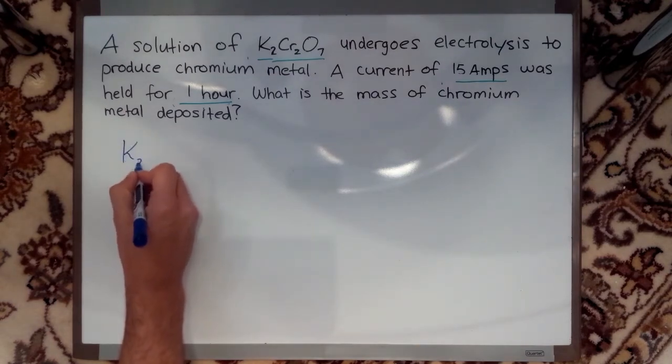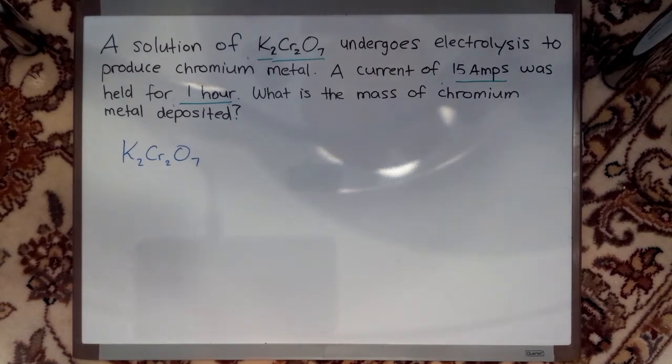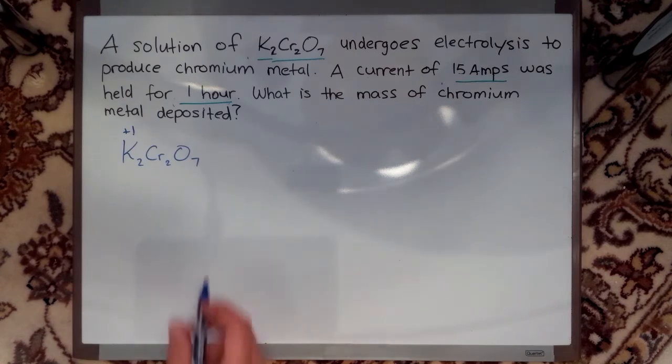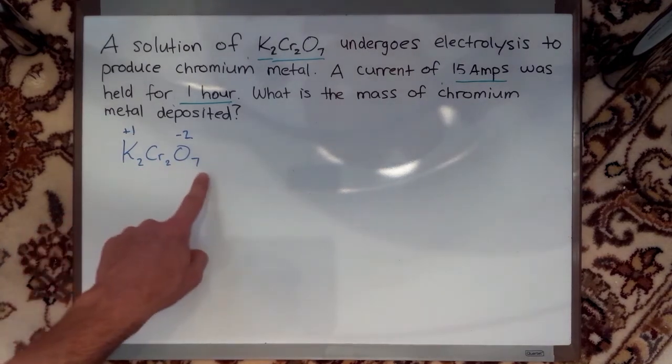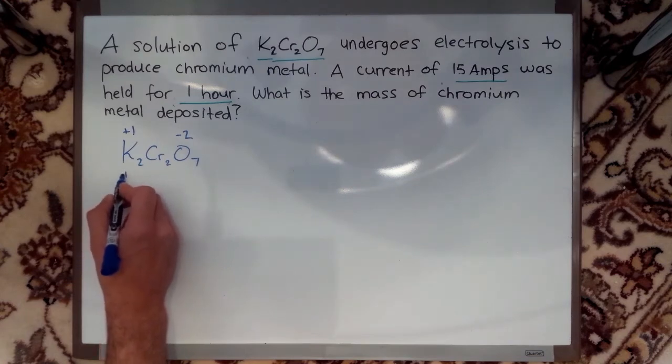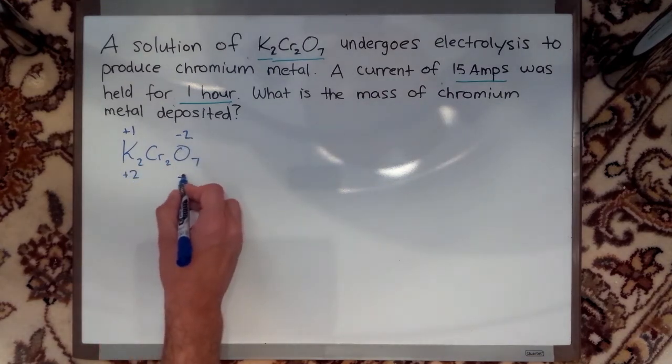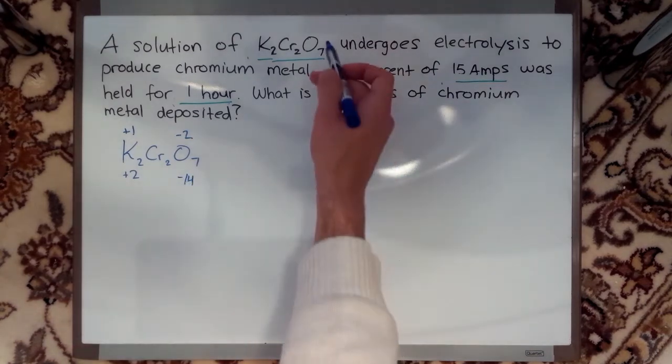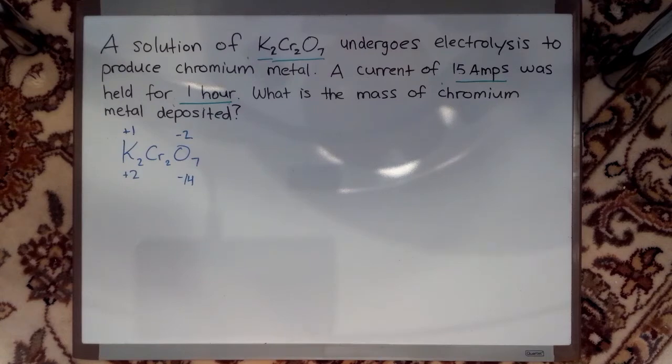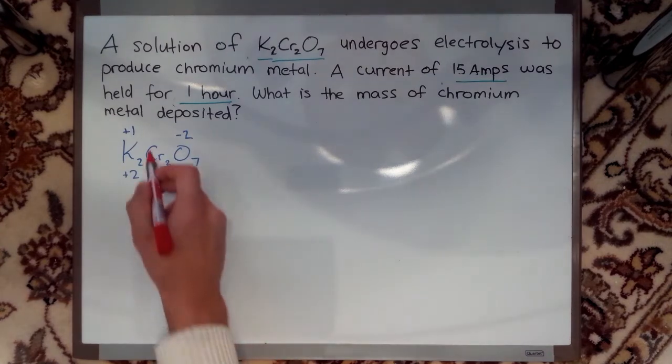So my compound is K2Cr2O7. K is always going to have an oxidation number of plus one, so I'm going to write the individual oxidation numbers on top. O will always have an oxidation number of minus two. But because I have two potassium ions and seven oxygen ions, the total charge contributed by them will be two times the plus one, which gives me plus two, and seven times the minus two, which is minus fourteen. Because I didn't have any charge written here for my compound, the total charge is zero. So I'm going to say the total charge contributed by the chromium is Y, and the individual charge for one chromium atom is going to be X.